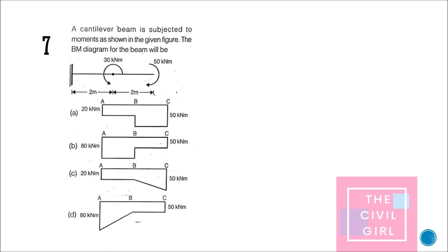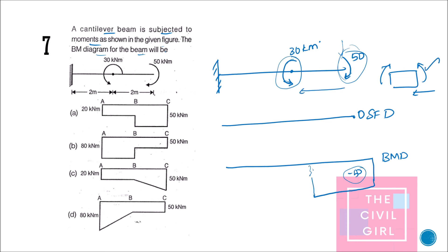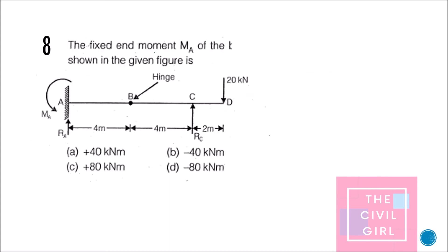Next question: the cantilever beam shown is subjected to moments — a clockwise moment of 50 kN·m at the end and an anti-clockwise moment of 30 kN·m at some intermediate point. The shear force diagram is zero throughout since there are no vertical forces. When drawing the bending moment diagram, only the option that starts at 50 and changes at the intermediate moment location suits — that is the answer.